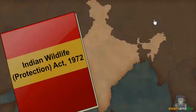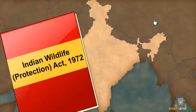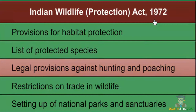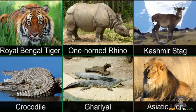Conservation efforts in India started gaining momentum in the 1960s, resulting in the implementation of the Indian Wildlife Protection Act of 1972. The salient features of the act included making provisions for habitat protection, publishing a list of protected species, imposing legal restrictions on hunting, poaching and trade in wildlife, and setting up national parks and sanctuaries in different parts of India.